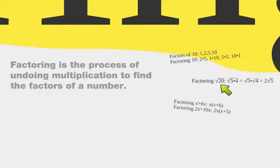So same thing here, factoring the square root of 20 is also 5 times 4, but I can break that square root apart so it becomes the square root of 5 times the square root of 4, which in essence is 2 times the square root of 5. Does that make sense? So you get to factor the number out underneath the radical, and then simplify as much as you can. Same thing here, factoring x squared plus 6x, pull out an x and you get x times x plus 6.